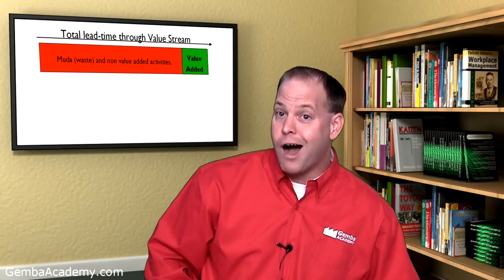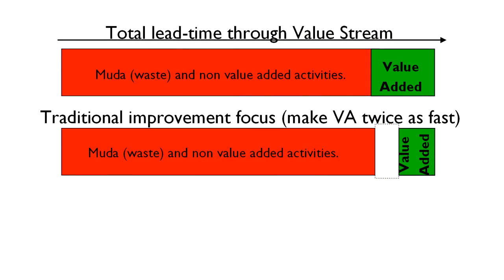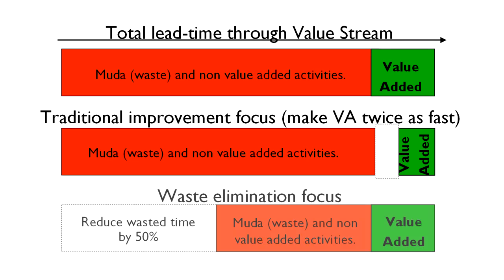Sadly, what we often see companies do is focus on the value-added portion of the lead time. For example, they work to save a few seconds or minutes of machine cycle time in order to reduce the overall lead time. And while this isn't necessarily bad, there's far more opportunity in focusing on reducing the waste in the process first, before worrying about the value-added steps.